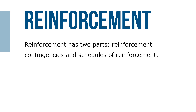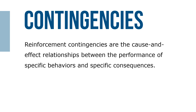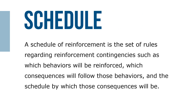Reinforcement has two parts: reinforcement contingencies and schedules of reinforcement. Reinforcement contingencies are the cause and effect relationships between the performance of specific behaviors and specific consequences. For example, if you get docked an hour's pay for being late to work, then a reinforcement contingency exists between a behavior — being late for work — and a consequence — losing an hour's pay. A schedule of reinforcement is the set of rules regarding reinforcement contingencies, such as which behaviors will be reinforced, which consequences will follow those behaviors, and the schedule by which those consequences will be delivered.